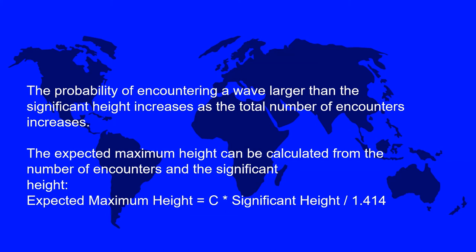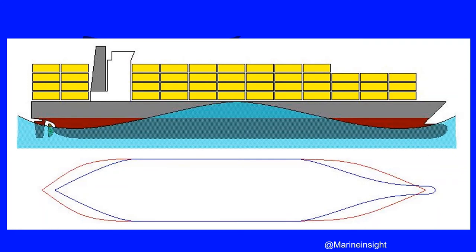The expected maximum wave height can be calculated from the number of encounters and the significant height. The formula is: expected maximum wave height equals C multiplied by significant height, divided by 1.414, where C is a constant whose values differ for different significant heights and probabilities of occurrence. In practical terms, a vessel on a sheltered route with a modal period of four seconds might encounter a wave of twice the significant height about once every two and a half hours, while in exposed sea conditions with a modal period of 10 seconds, this may occur about once every five and a half hours.